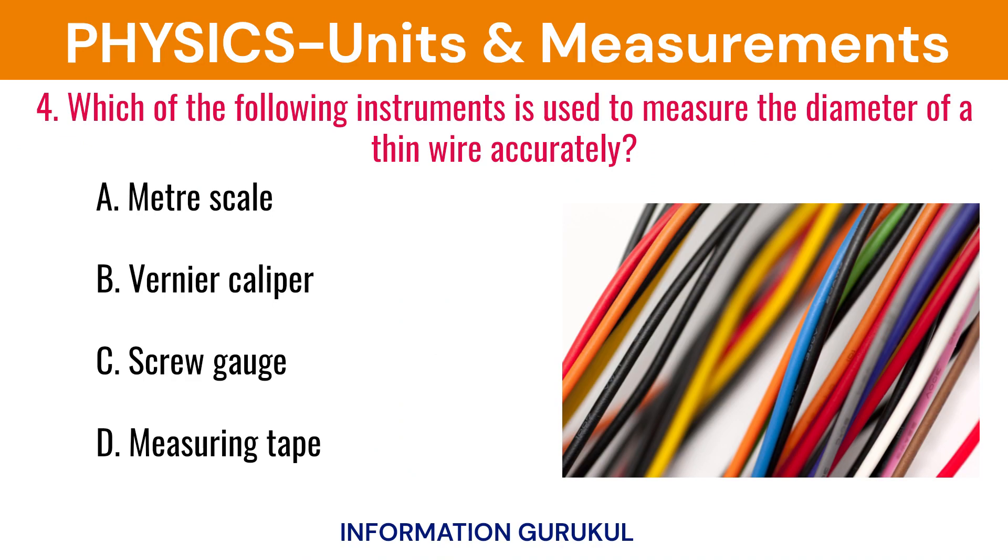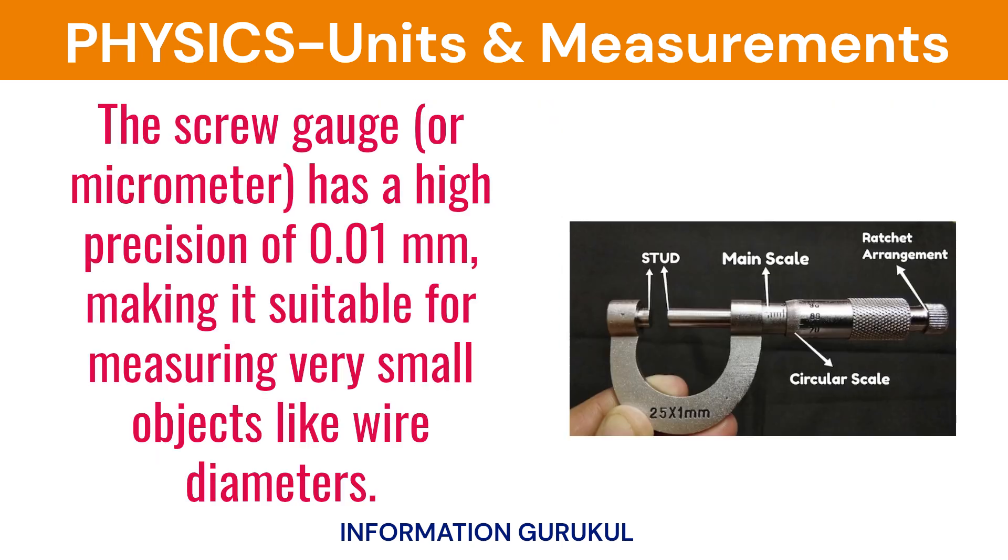Which of the following instruments is used to measure the diameter of a thin wire accurately? Screw gauge. The screw gauge, or micrometer, has a high precision of 0.01 mm, making it suitable for measuring very small objects like wire diameters.